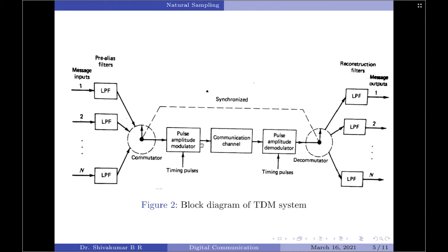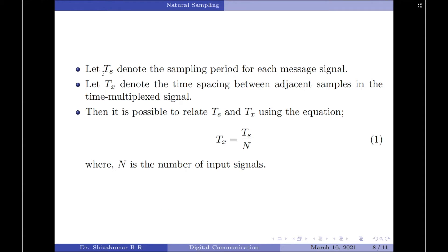Coming back to the TDM system, suppose that we have N message signals to be multiplex that have similar spectral properties. The sampling rates for each of these message signals can be determined in accordance with the sampling theorem. Let Ts denote the sampling period for each of the message signal and let Tx denote the time spacing between adjacent samples in the time multiplex signal. Then, it is possible to relate Ts as well as Tx using the equation given by Tx equals Ts divided by N, where N is the number of input message signals.